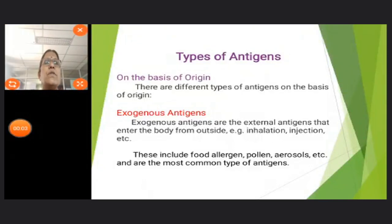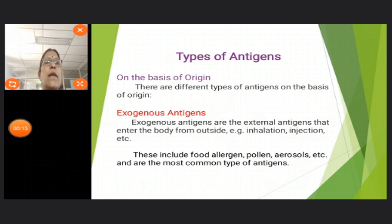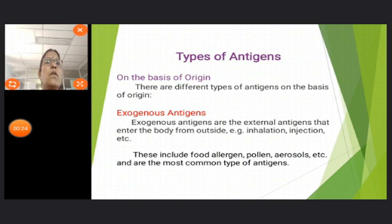Types of Antigens. On the basis of origin, there are different types of antigens. Exogenous antigens are the external antigens that can enter the body from outside, for example by inhalation or by means of injection. These include food allergens, aerosols, etc.